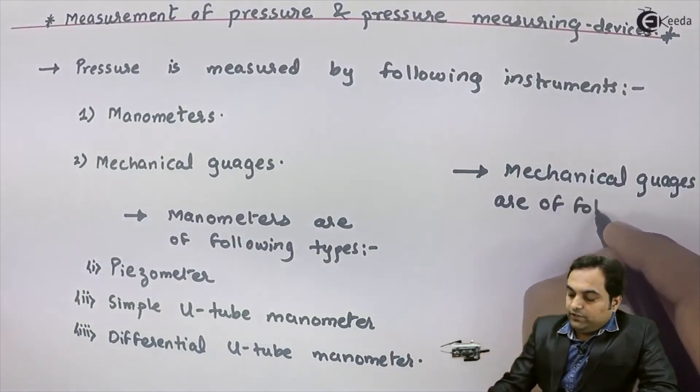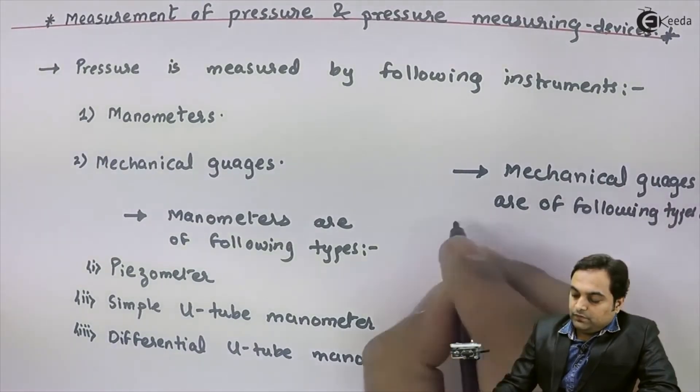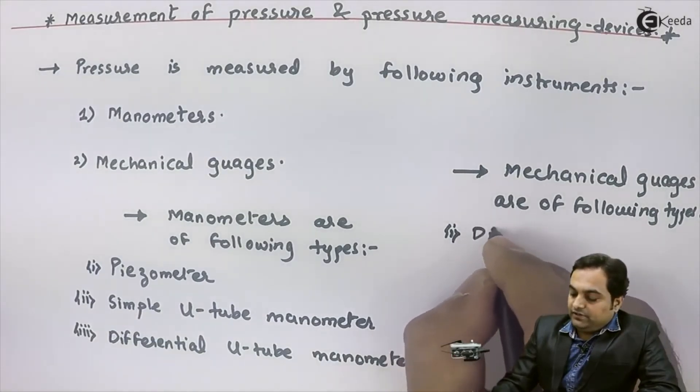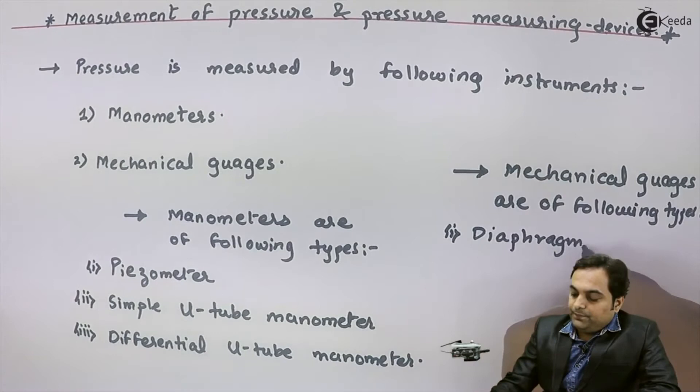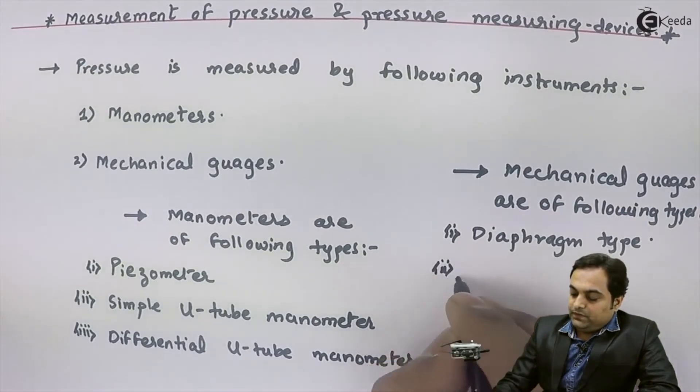are of following types: the first one is diaphragm type measuring instrument, the second type is Bourdon's